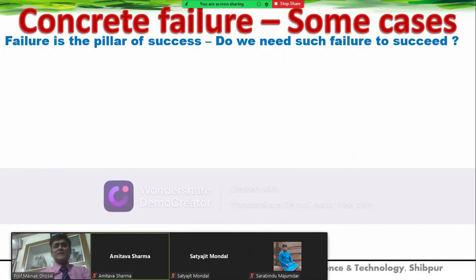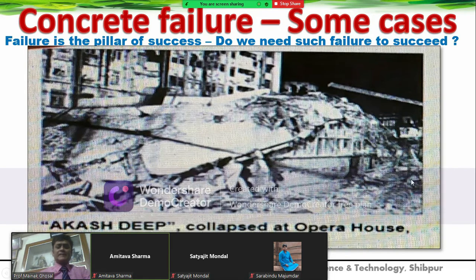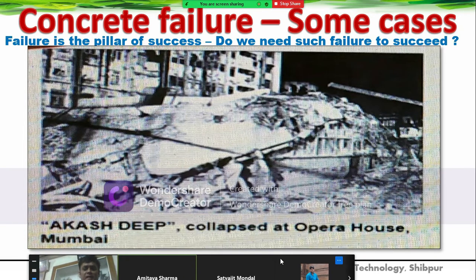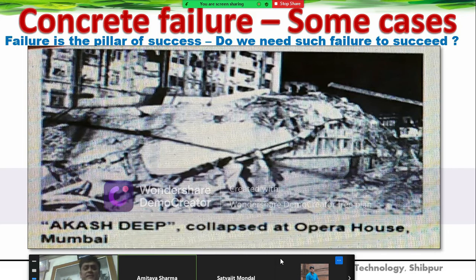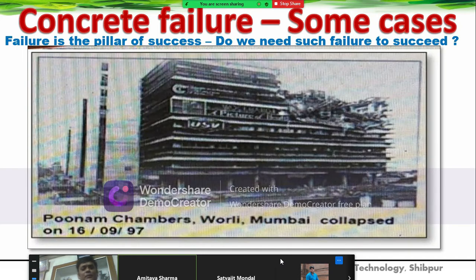Looking at concrete failures: this is an aggressive apartment in Mumbai that failed due to durability issues. In civil engineering, failure is not the pillar of success—you cannot get a pillar if the pillar fails. Poonan Chambers in Mumbai collapsed in 1997 due to durability problems.